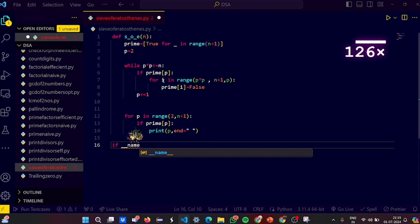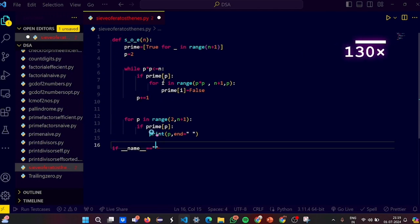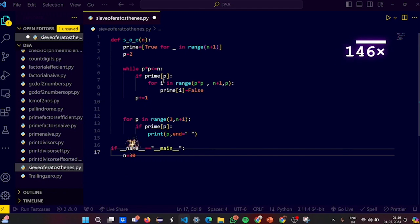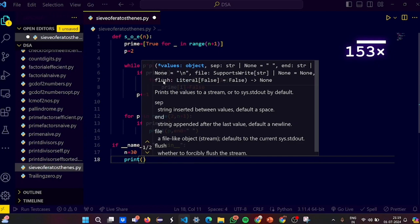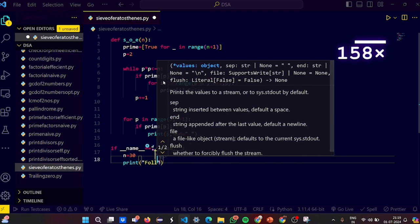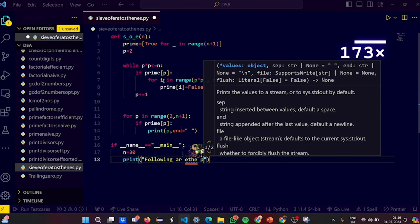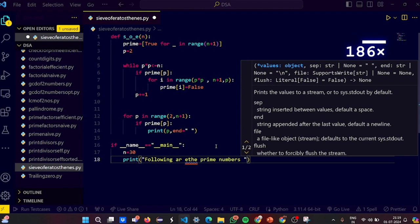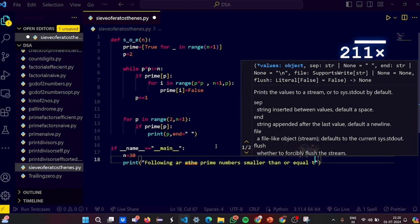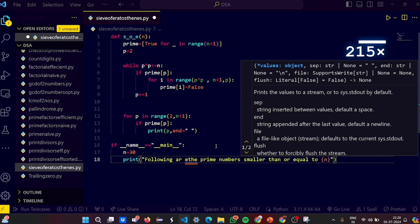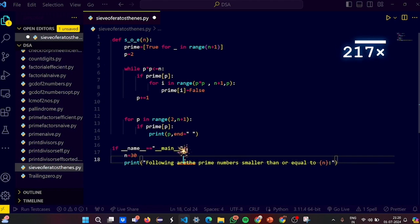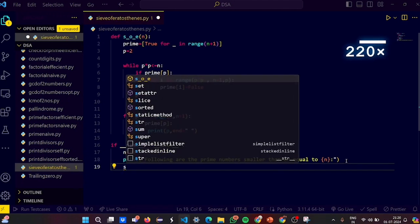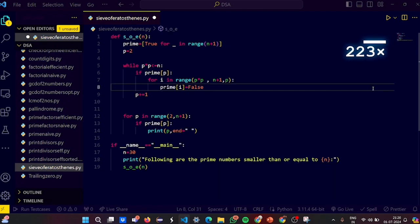Let's write if name equals main. If you understand the algorithm, it's really a piece of cake. You should know how to frame the algorithm. That's it. Then n equals, let's take the number 30. Then let's print. Print statement. Following are the prime numbers smaller than or equal to n. Let's call that function. The name of our function is SOE. We are done. Let's save this.